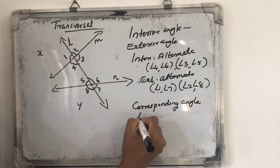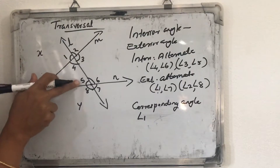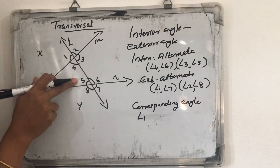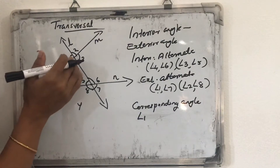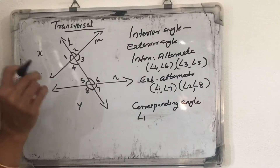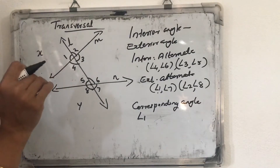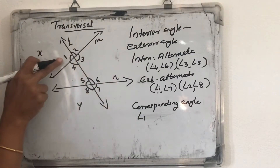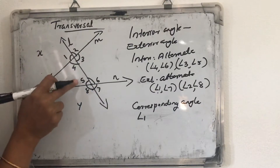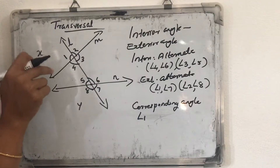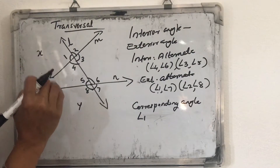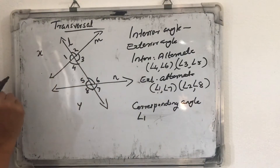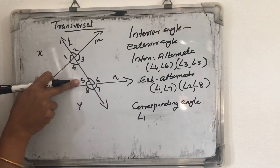Suppose if we take angle 1, then its corresponding angle will be angle 5. Angle 1 and angle 5 — angle 1 is an exterior angle, but angle 5 is an interior angle, and both are on the same side of the transversal. So angle 1 and angle 5 are one pair of corresponding angles. For understanding corresponding angles, think about their position — the same position at each intersecting point. Such type of angles are called corresponding angles — same position, but one is exterior and the other is interior.